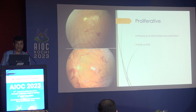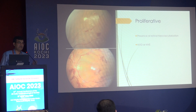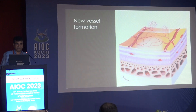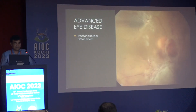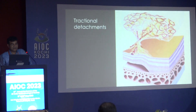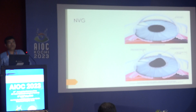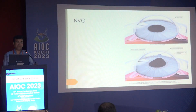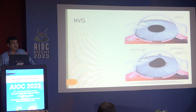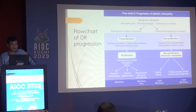Then comes proliferative diabetic retinopathy — any retinal neovascularization, whether NVE or NVD, labels it as proliferative diabetic retinopathy. This is how the new vessel starts forming. In advanced eye disease there is traction retinal detachment or neovascular glaucoma (NVG). NVG starts from the pupillary margin and goes into the angle — there is contraction of the angle and it causes closed-angle glaucoma.